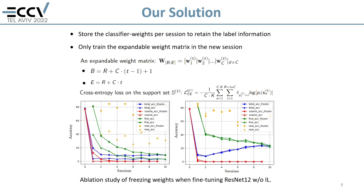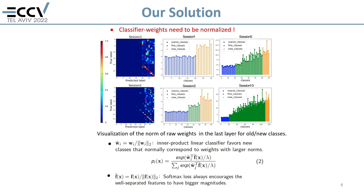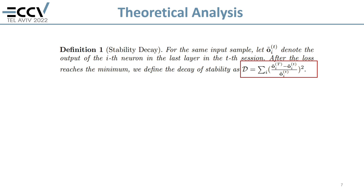In the new session, we minimize the cross-entropy loss on the support set. Comparing left with right of the figure, we find that freezing classifier weights outperforms not doing so. This figure shows the norm of raw weights in the last layer for old and new classes. The linear classifier will have a larger weight for the current class's neurons, inducing the queries of previous classes to be likely assigned into the current class's region in the embedding space. Instead, we compute the logit using the normalized inner product and then apply Softmax to the rescaled logit.